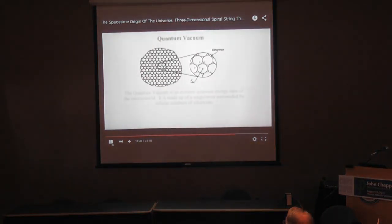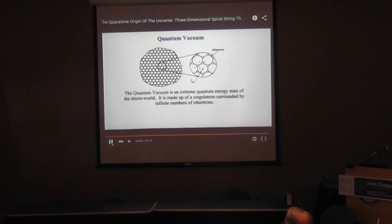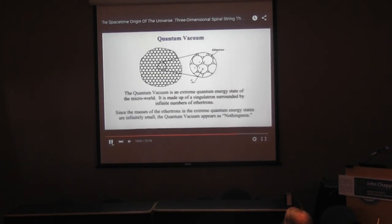The quantum vacuum is an extreme quantum energy state of the micro world. It is made up of a single tron surrounded by an infinite number of ethertrons. Since the masses of the ethertrons in the extreme quantum energy states are infinitely small, the quantum vacuum appears as nothingness.